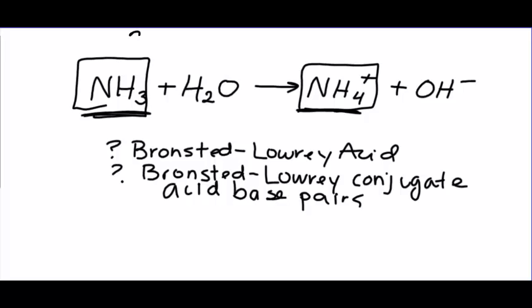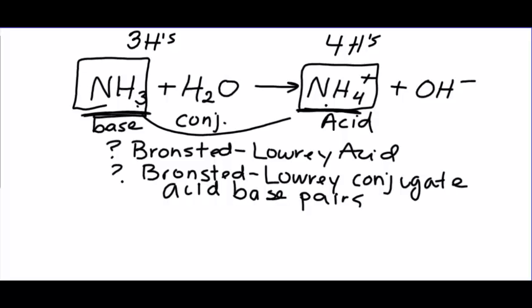Then you count up the hydrogens. This has three hydrogens. This has four hydrogens. Within the partnership, the one with more hydrogens is the acid, and the one with less hydrogens is the base. Because if you think about it, how would NH3 turn into NH4+? It would have to gain an H. If you're an H gainer, you're a base. If you're an H loser, you're an acid. So NH3 is the base. NH4+ is the acid, and we call them a conjugate acid-base pair. They are partners. We would actually call NH4+ the conjugate acid of NH3.